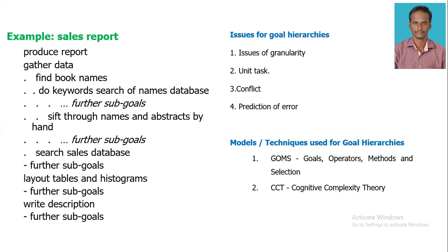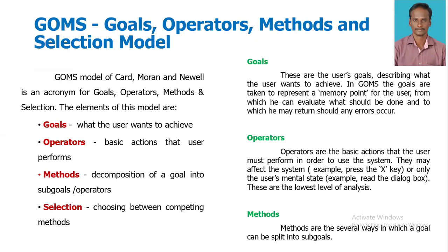The first model is GOMS — Goals, Operators, Methods, and Selection. The next is CCT, Cognitive Complexity Theory. The elements of the GOMS model are: Goals, which is what the user wants to achieve; Operators, which are basic actions the user performs; Methods, which are the decomposition of a goal into sub-goals or operators; and Selection, which is choosing between competing methods.